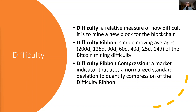We have another metric called the difficulty ribbon, which is a derivative of difficulty. It is simple moving averages of Bitcoin mining difficulty. These moving averages occur over different time periods — we've got 200-day, 128-day, all the way down to 14-day. They can be used to identify potential price bottoms if used in the difficulty ribbon compression metric.